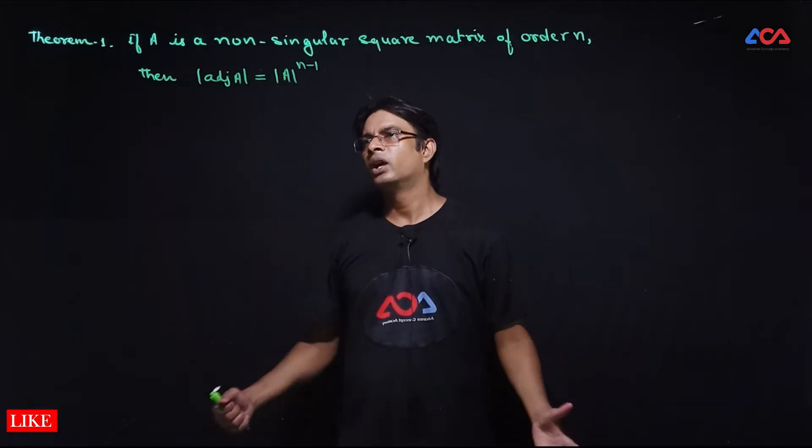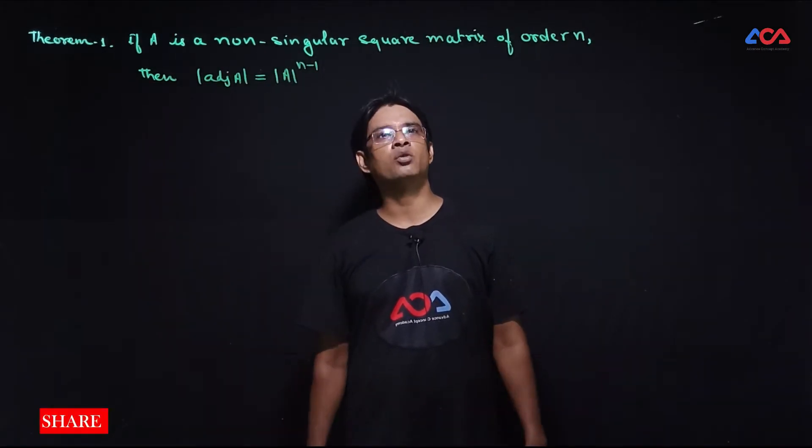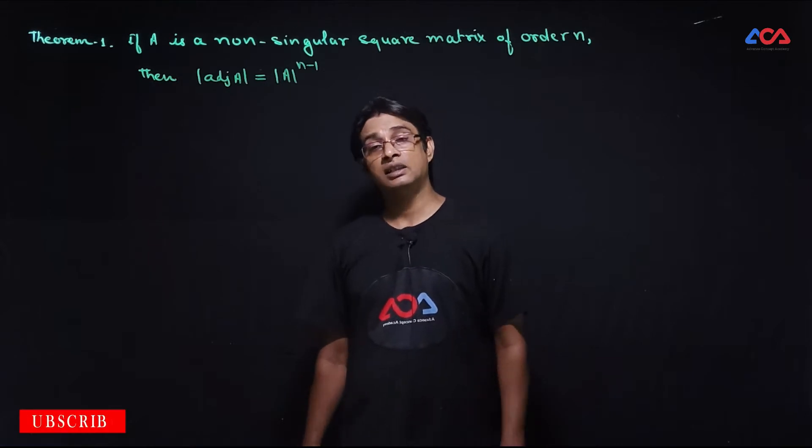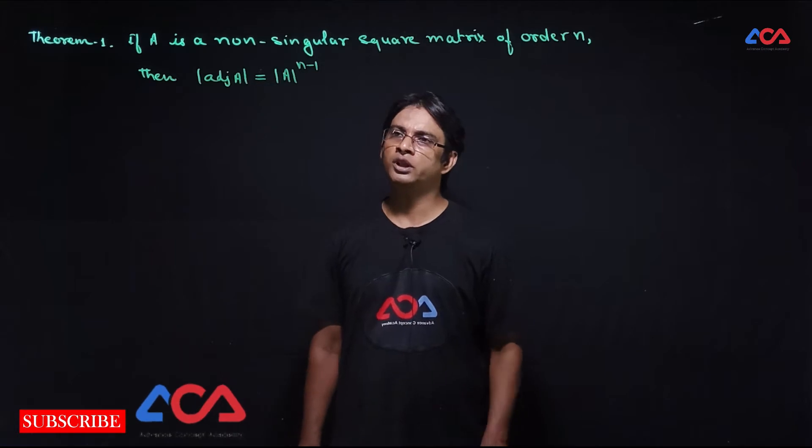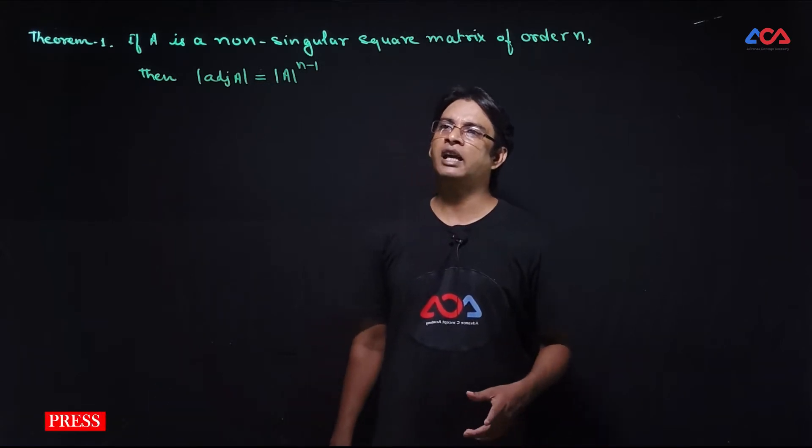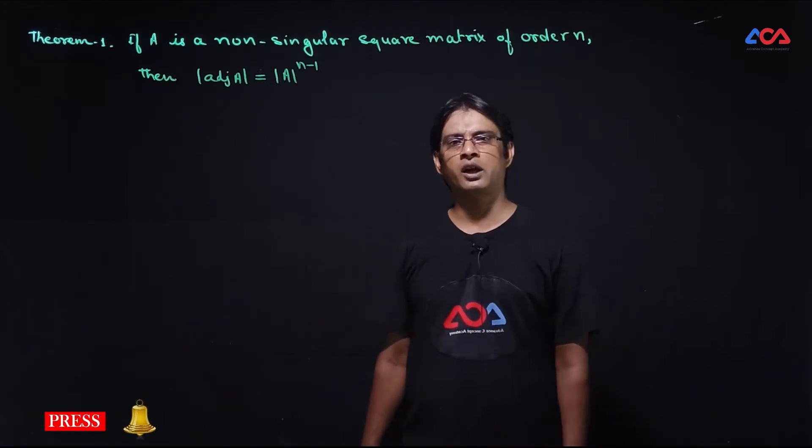Next theorem: If A is a non-singular square matrix of order n, then the determinant of adjoint A is equal to determinant of A to the power n minus 1. We have to prove this important theorem.